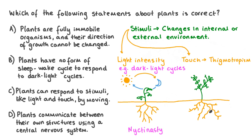Looking at the statements: the first says plants are fully immobile and their direction of growth cannot be changed — this is incorrect, as we've seen many examples of plant movement. The second says plants have no sleep-wake cycle to respond to dark-light cycles — also incorrect, as light is a key stimulus for plants. The third says plants can respond to stimuli like light and touch by moving — this is correct. The fourth says plants communicate using a central nervous system — plants use electrical signals and plant hormones, not a central nervous system, so this is incorrect. Therefore, the accurate statement is that plants can respond to stimuli like light and touch by moving.